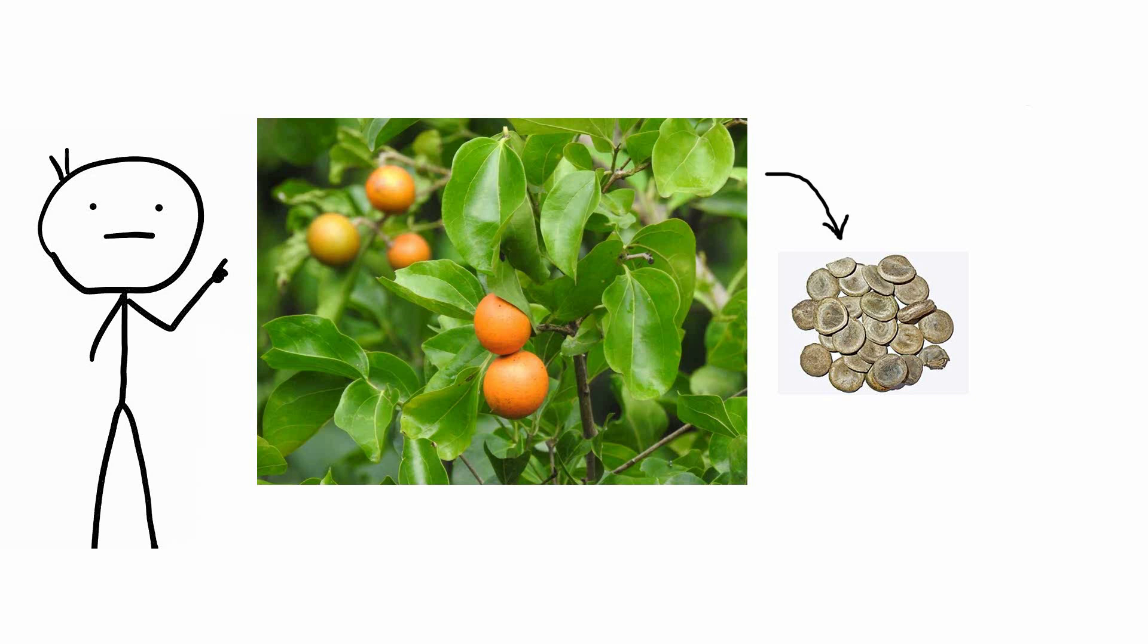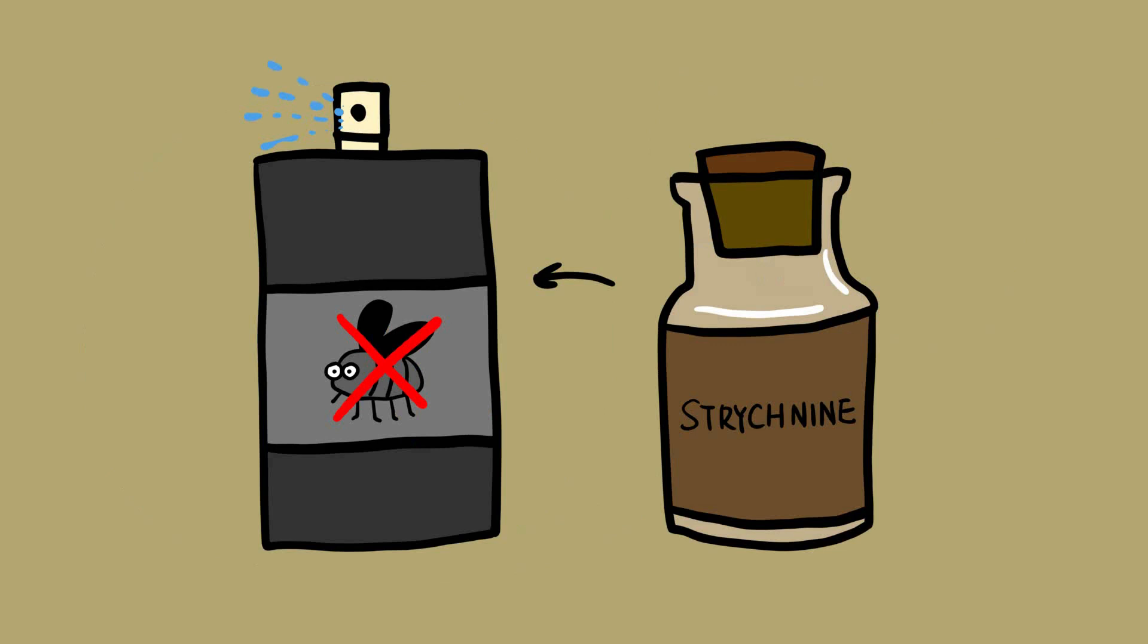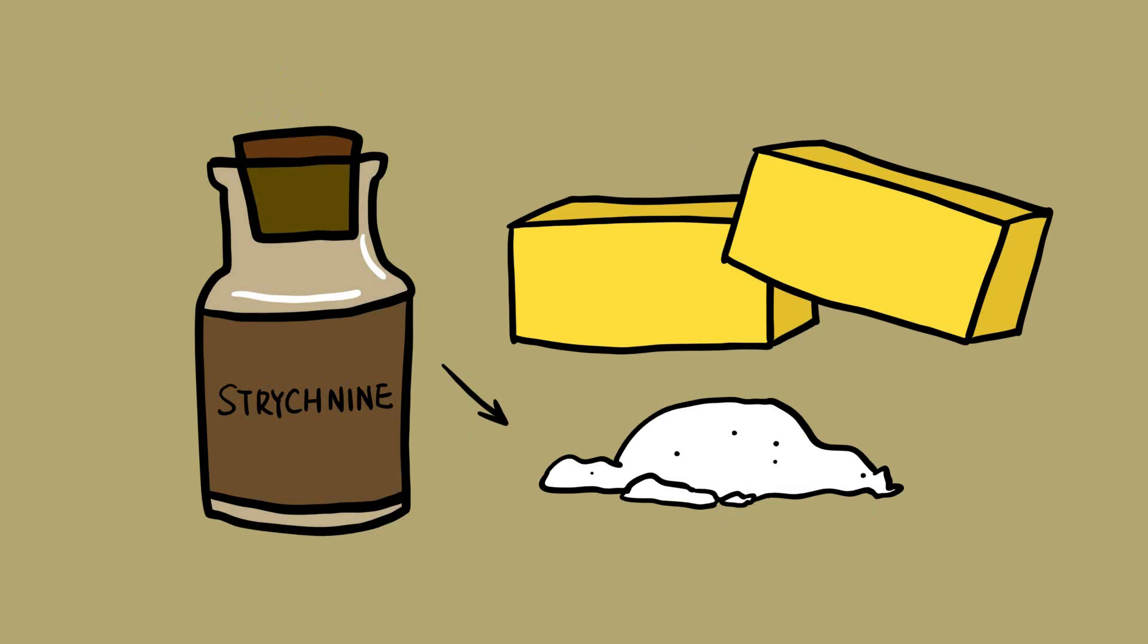Strychnine is derived from the seed of the dog button plant, Strychnos nux vomica, which grows in tropical areas. In the past, it was used to treat a wide range of medical conditions. These days though, its primary use is a pesticide and rat poison. However, some drug dealers apparently add it to heroin to smooth the effects.